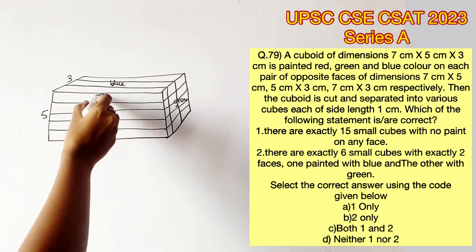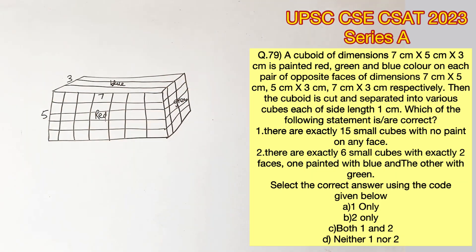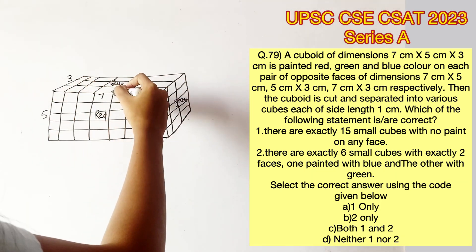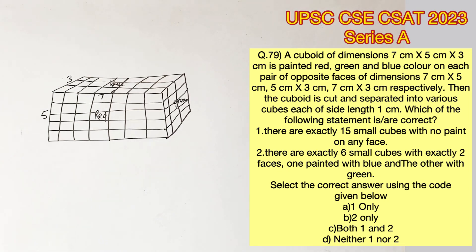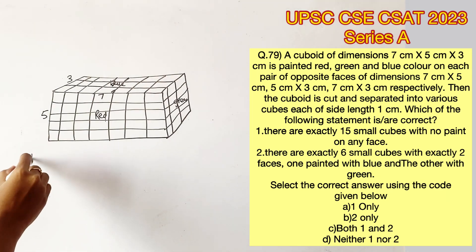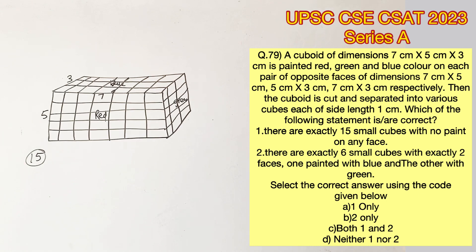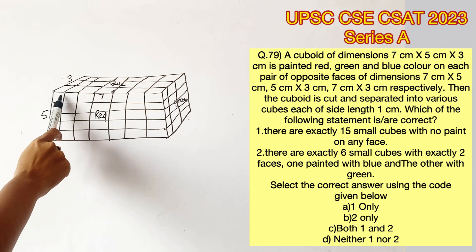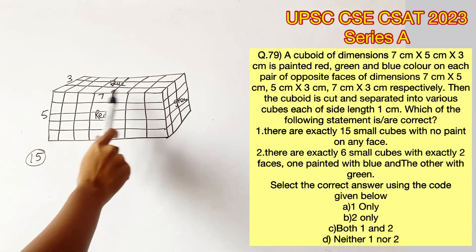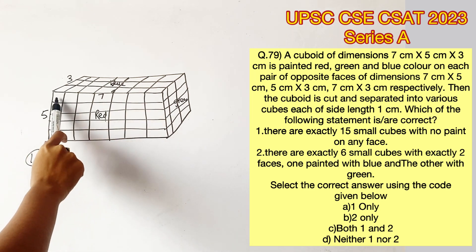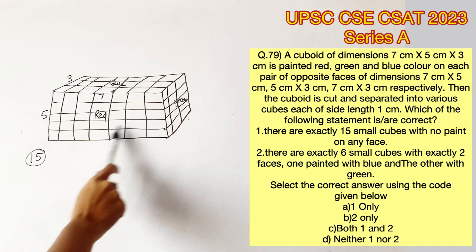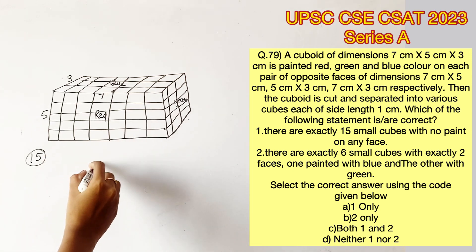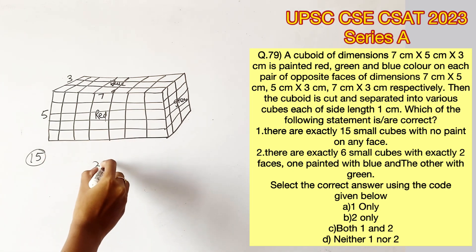The cuboid will be cut according to its dimensions. Statement 1 says there are exactly 15 cubes without any paint on any face. To find this, we avoid all cubes exposed on the outside. Calculating the front face: 7 by 5 gives us a total of 35 cubes in the front which have paint on them.